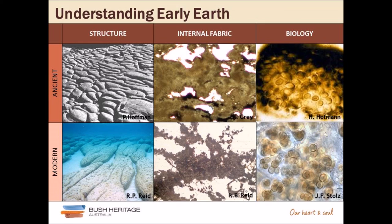On the left-hand side looking at structure: the top image shows 2-billion-year-old stromatolites from Great Slave Lake in Canada, and the bottom shows elongate nested stromatolites actively accreting in Hamlin Pool — you can see how similar the structure is. The middle column shows internal fabric: a 600-million-year-old internal fabric from a stromatolite in the Pilbara compared to a modern Hamlin Pool stromatolite — not very grainy, with that internal micritic framework, very similar to the ancient example.